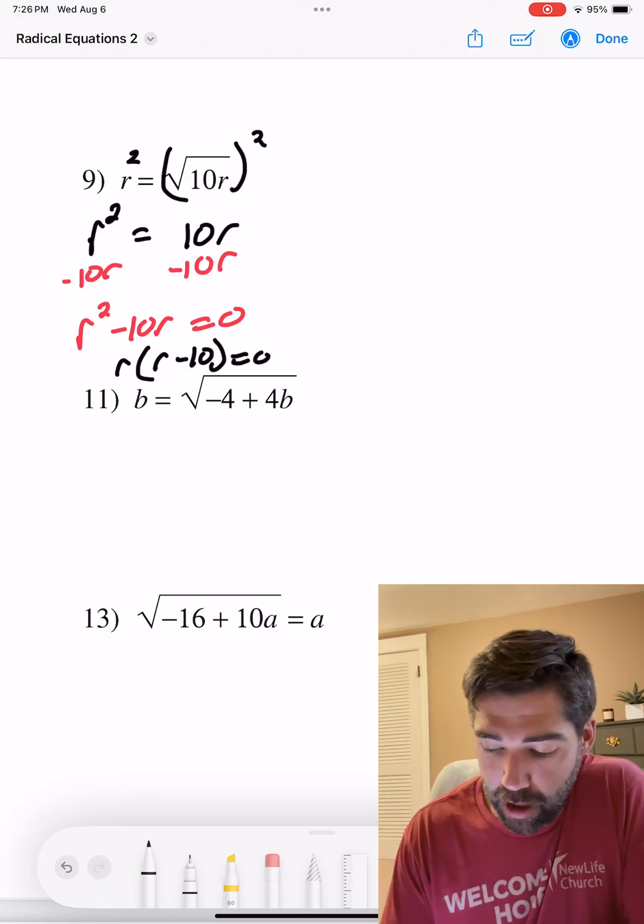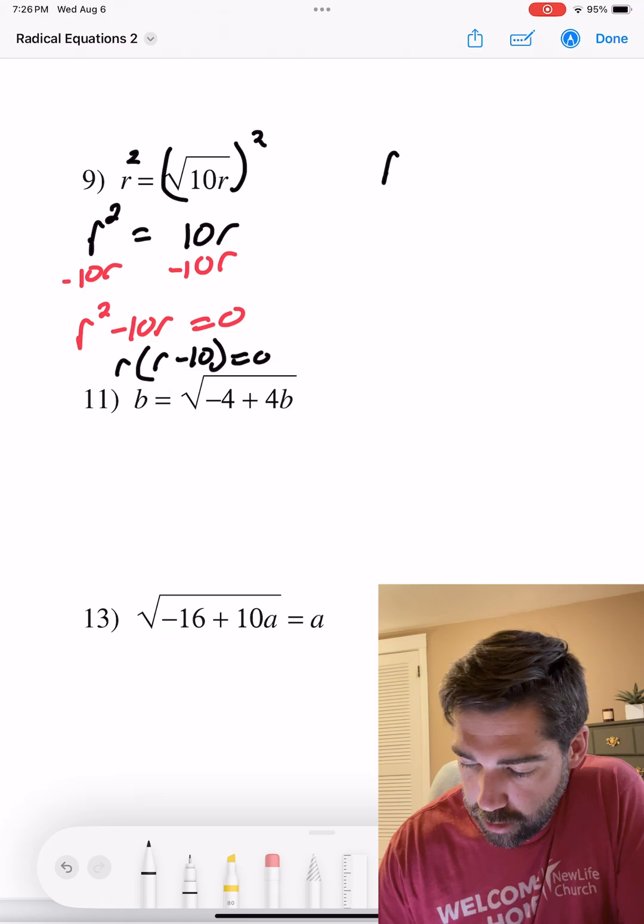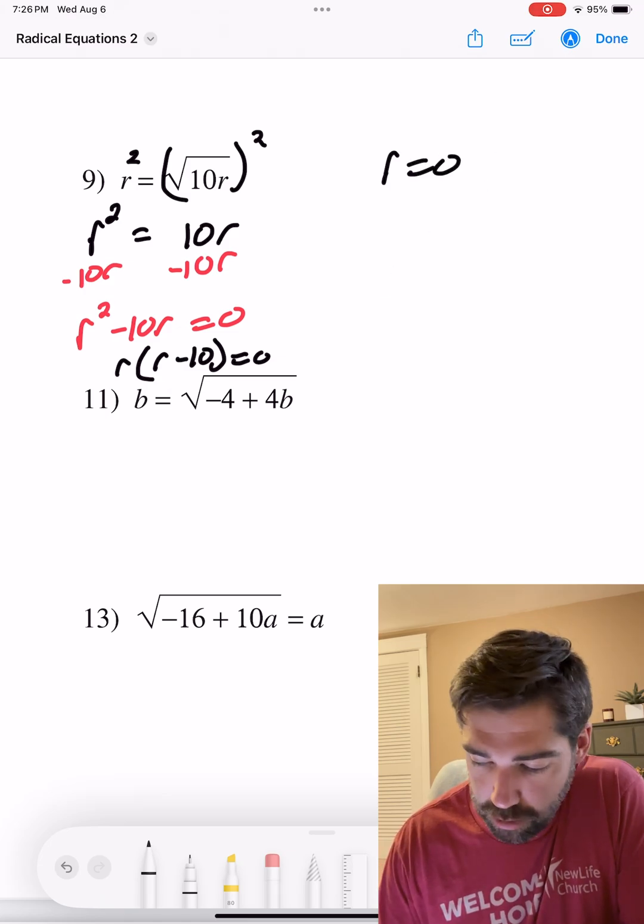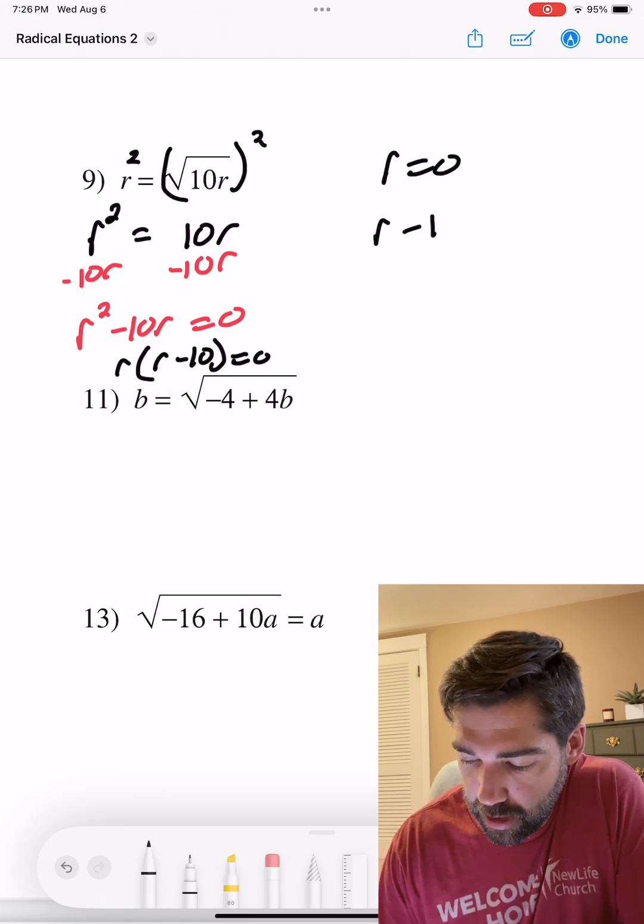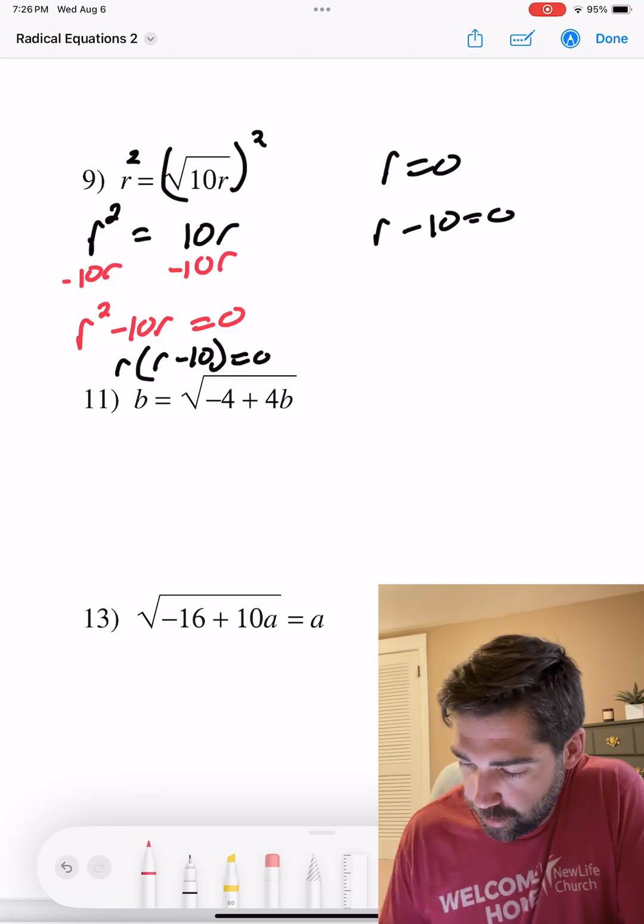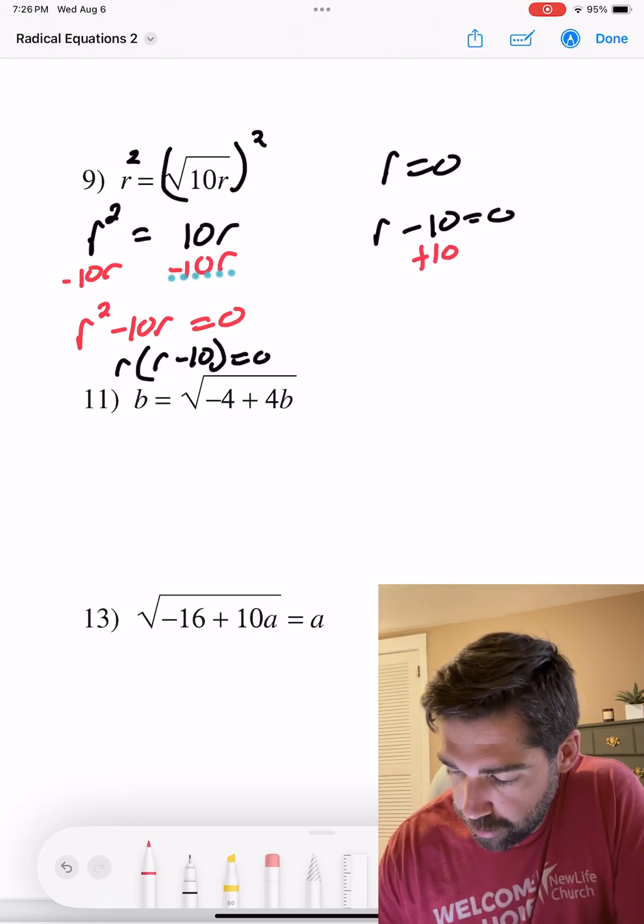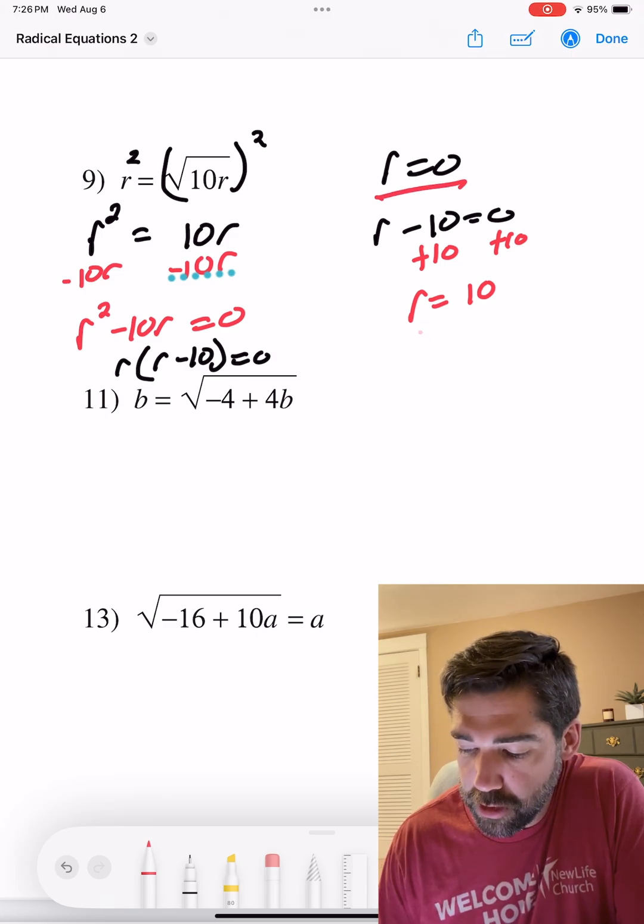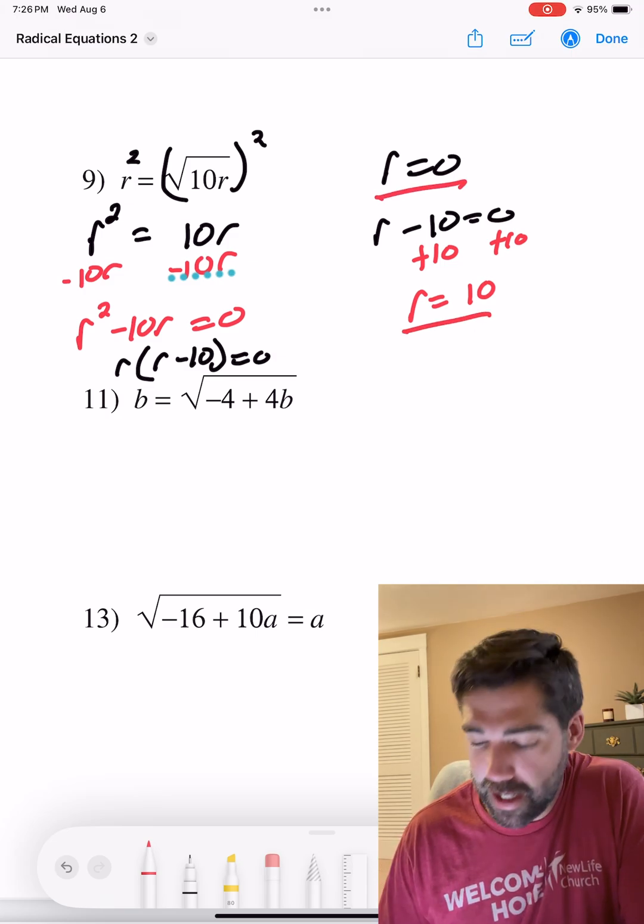So here are our possible solutions. We can set r equal to zero and that's a possible solution, or r minus 10 set that equal to zero as our other possible solution. We want to add 10, r equals 10. So two possible solutions is r equals zero and r equals 10.